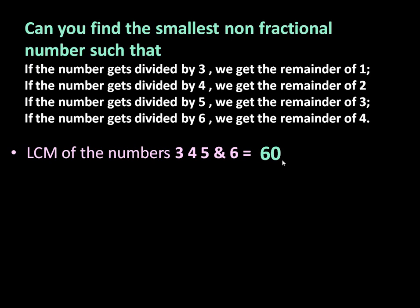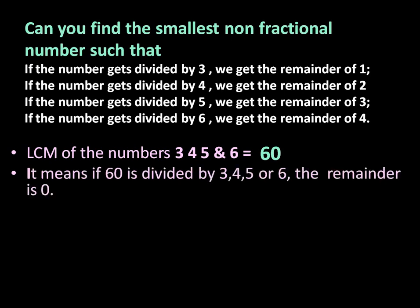Now we got LCM of these four numbers equal to 60. It means when 60 is divided by 3, 4, 5 or 6 the remainder will be 0, because 60 is the LCM of 3, 4, 5 and 6. But we want remainder 1, 2, 3, 4.